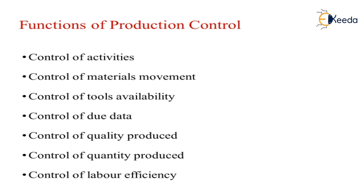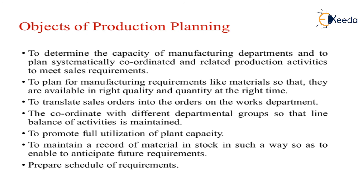Finally, in brief, the functions of production control are: controlling activities once the mobiles are ready — how to control transportation, how to manage sales, how to control production once a definite quantity is present. Similarly, the control of materials movement, news availability, due dates, quality produced, quantity produced, and labor efficiency — all of these are functions of production control.